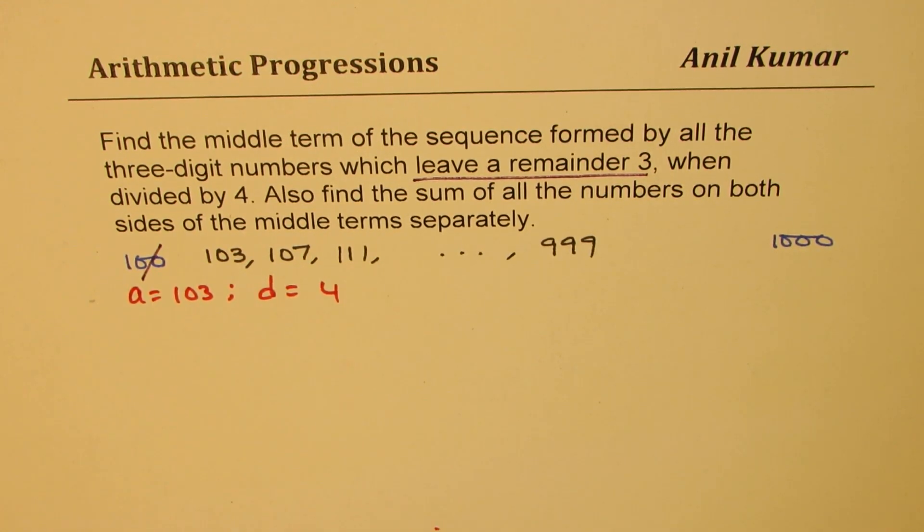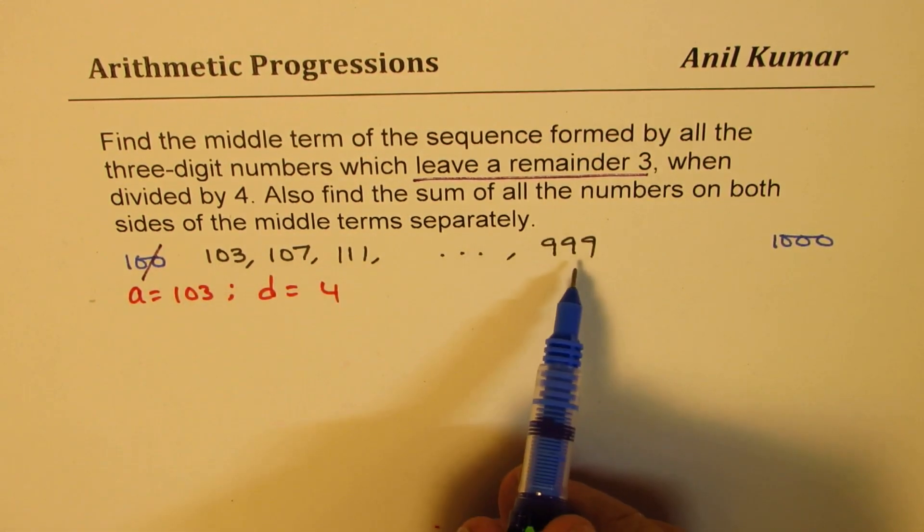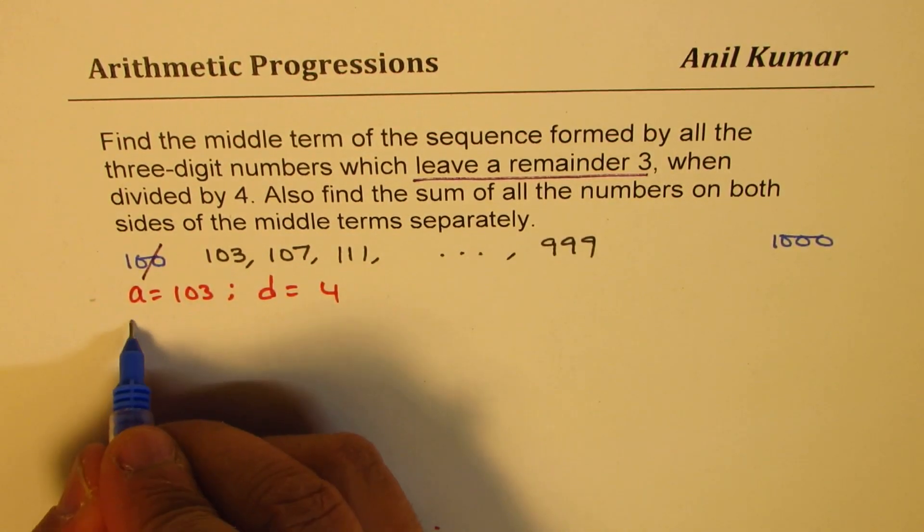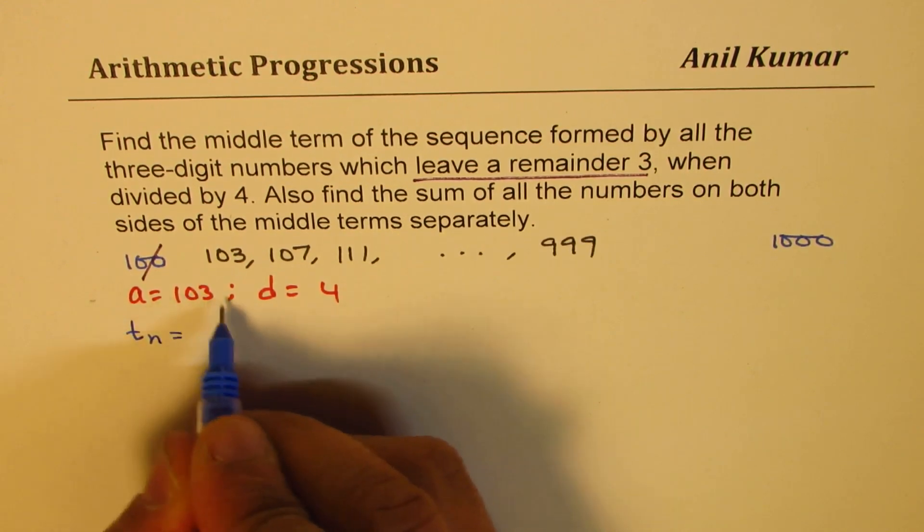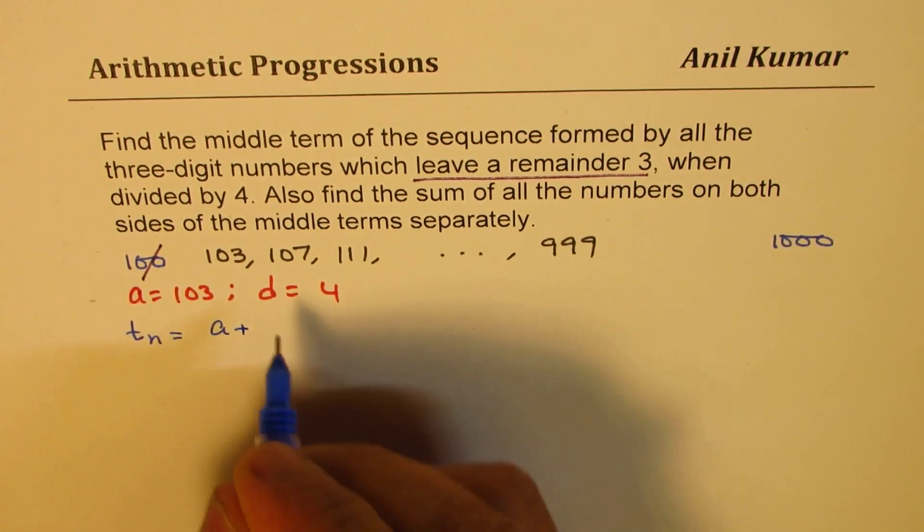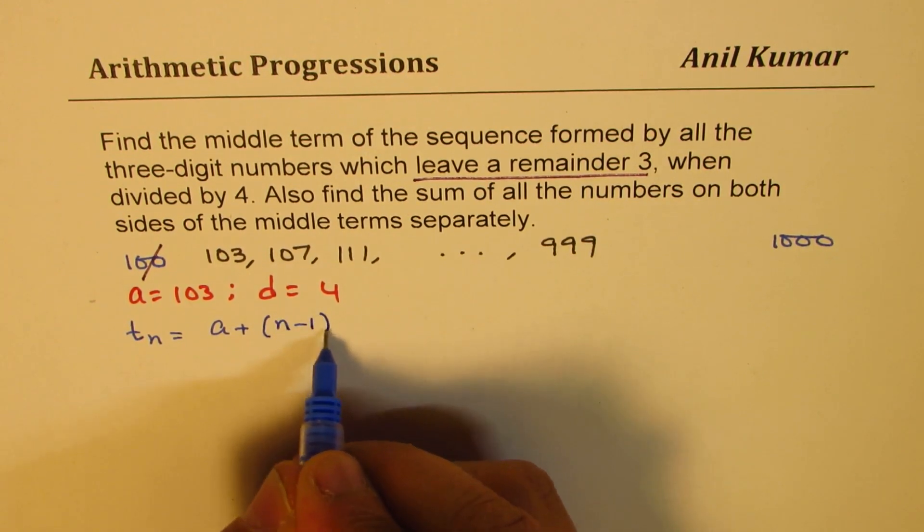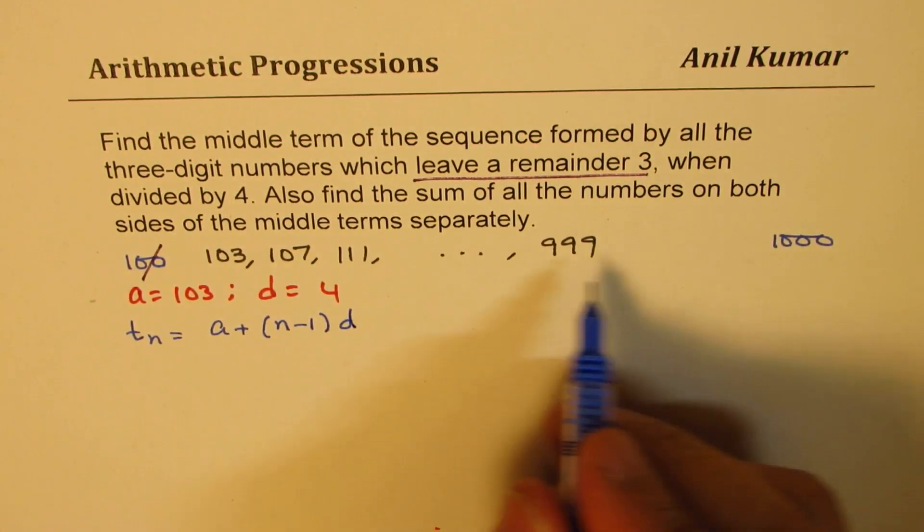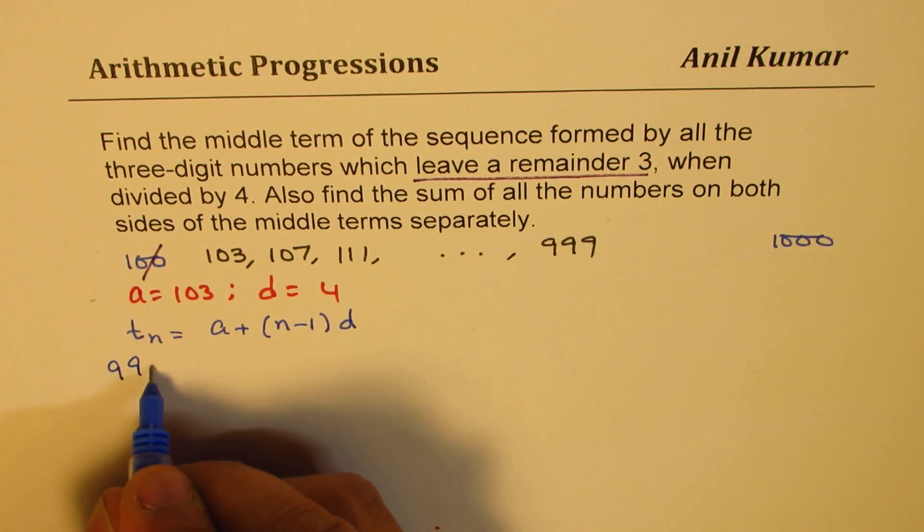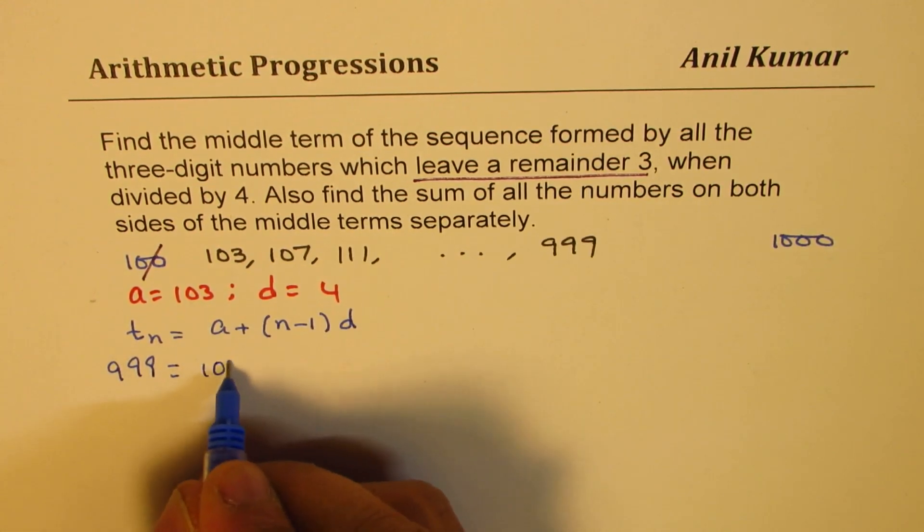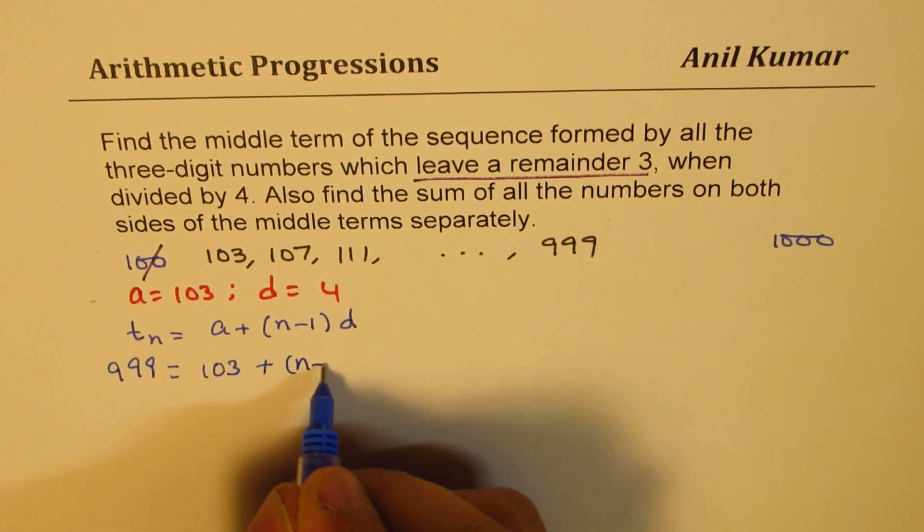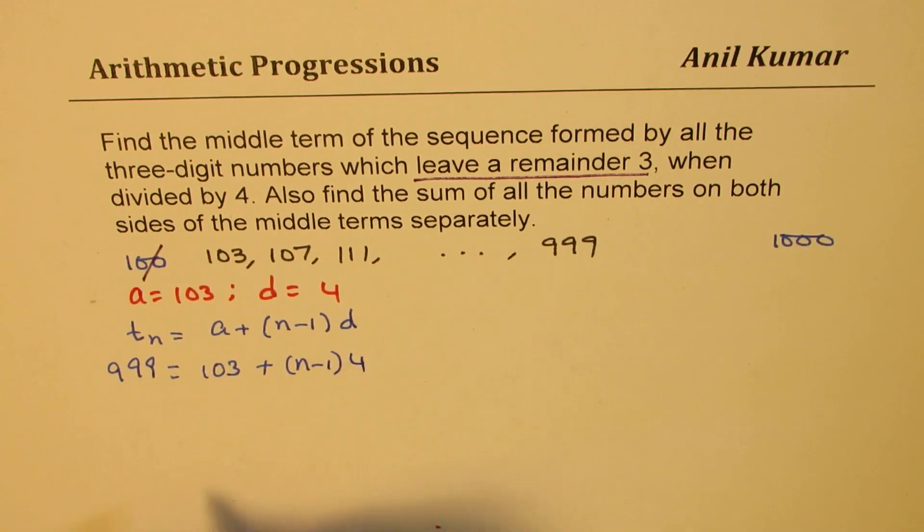How many are number of terms? That is the second thing. We know first term and the last term. Number of terms tn could be found by the formula a plus n minus 1 times d. So the last term here is 999, first term is 103.